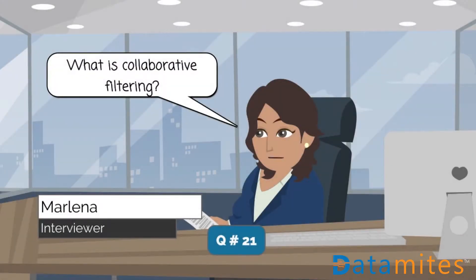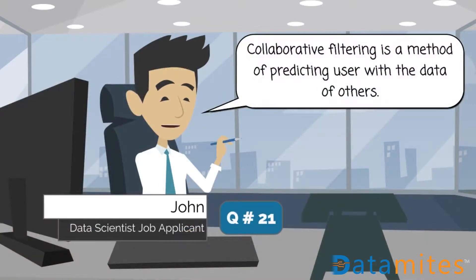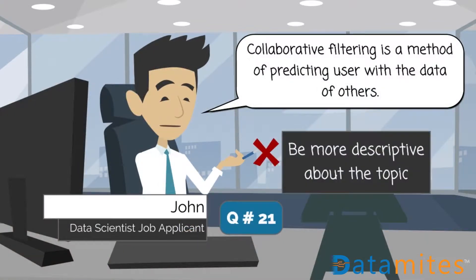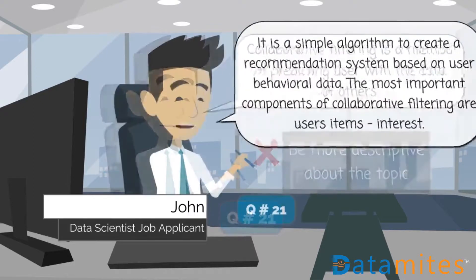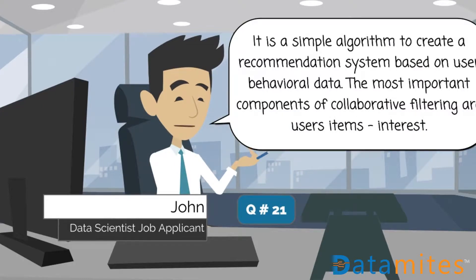Collaborative filtering is a method of predicting user preferences with the data of others. It is a simple algorithm to create a recommendation system based on user behavioral data. The most important components of collaborative filtering are users, items, and interest.